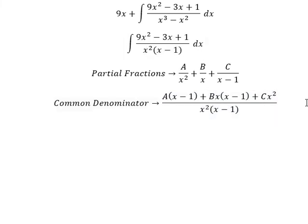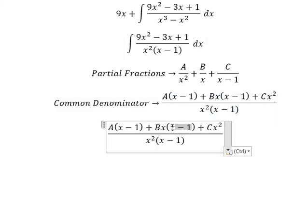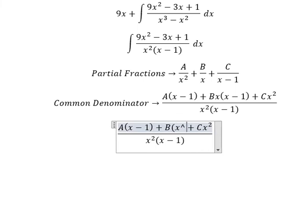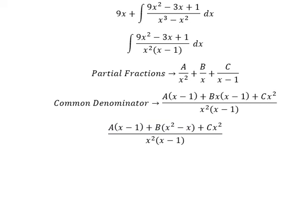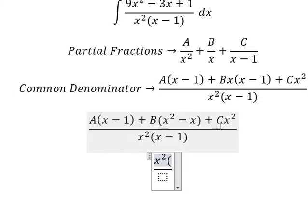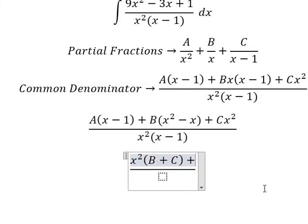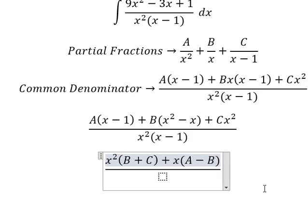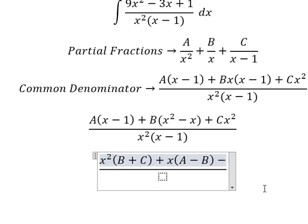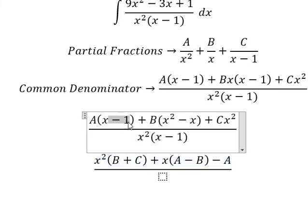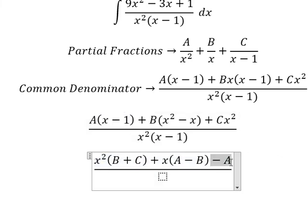Next we need to expand. Next we need to arrange based on the terms of x. About x², we have B and C. About x, we have A minus B. About the number, we have negative A. So A multiplied by negative number 1, we have negative A.